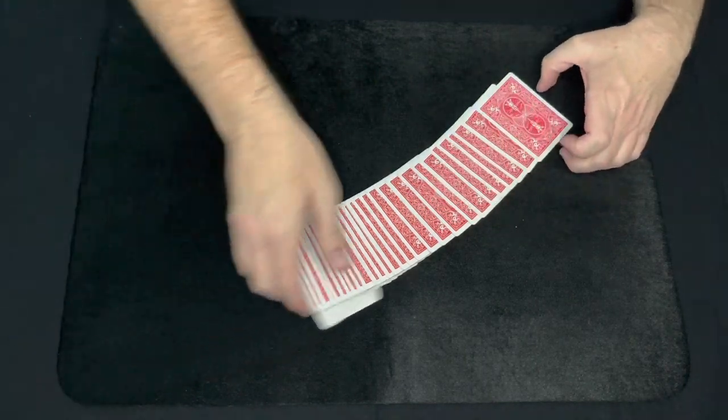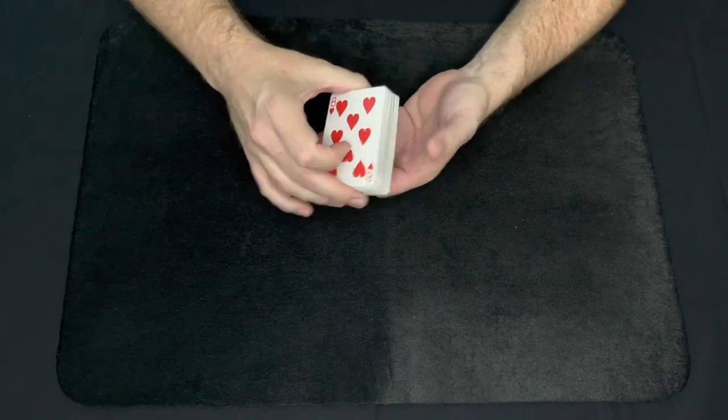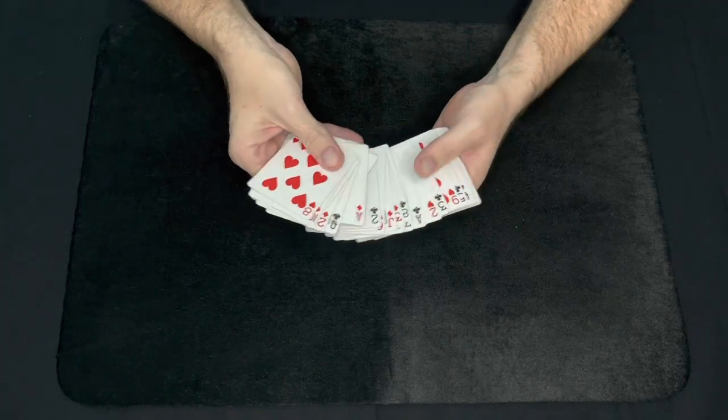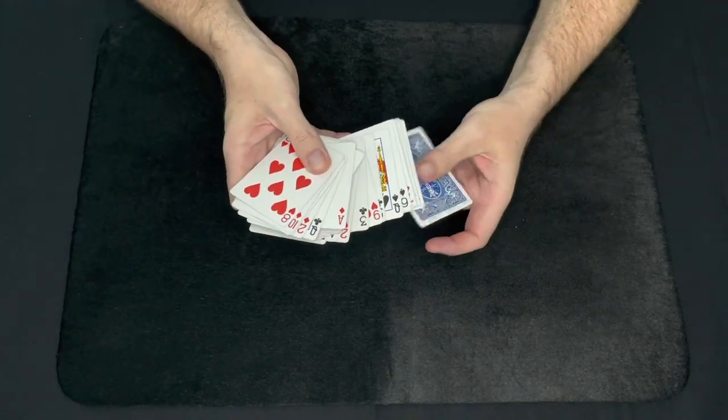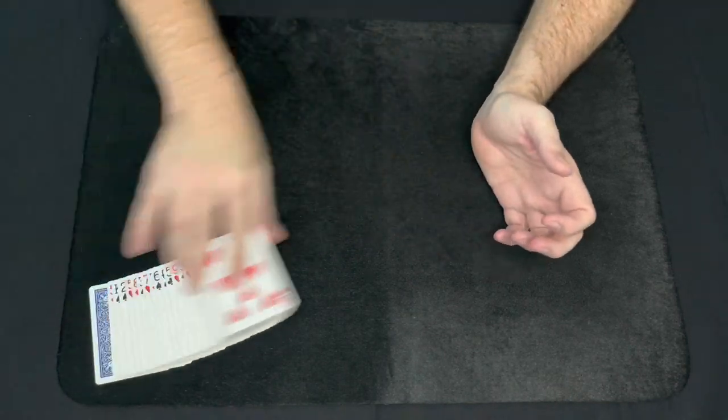And then you can scoop the cards up and then show from the bottom that they are all different. And if you show them enough, you just say these are all different cards and you're not showing this card here. So that's an easy color change effect you can do with a double backed red blue gimmick card.